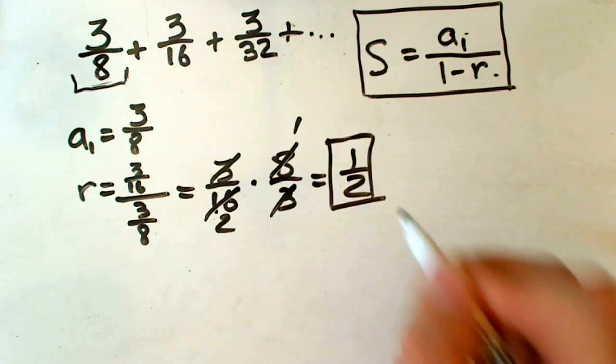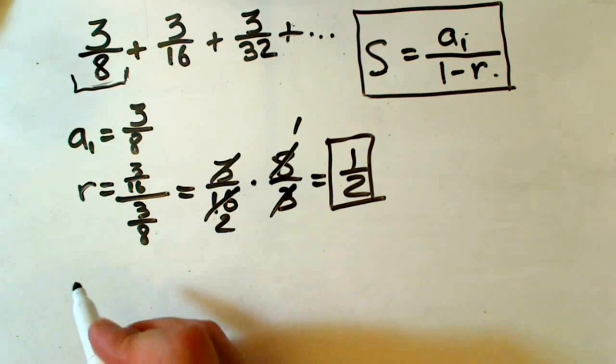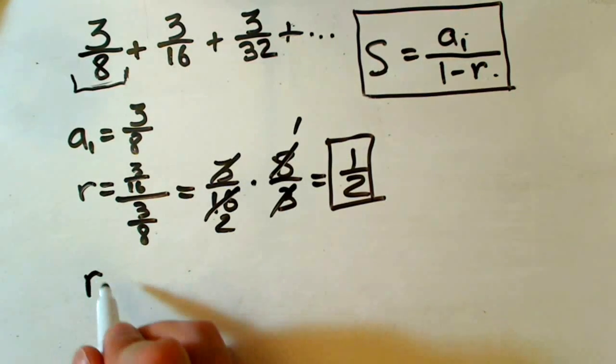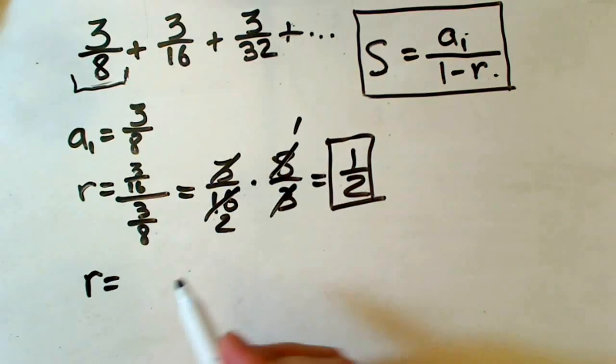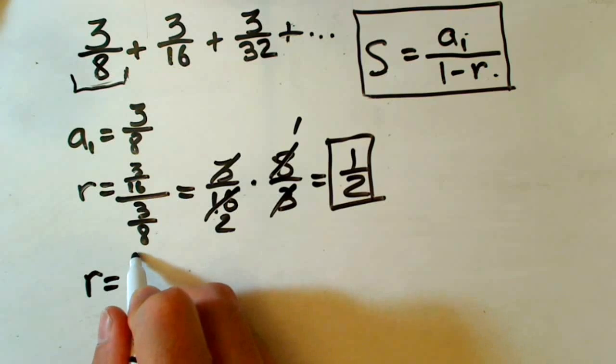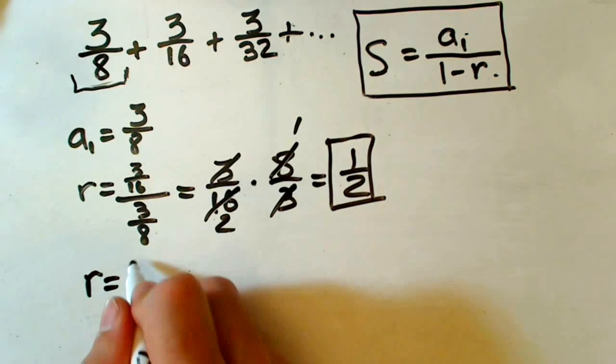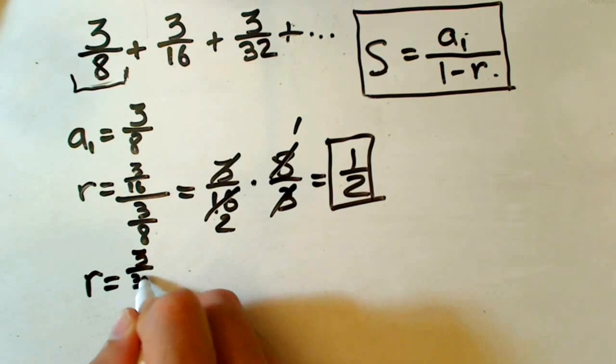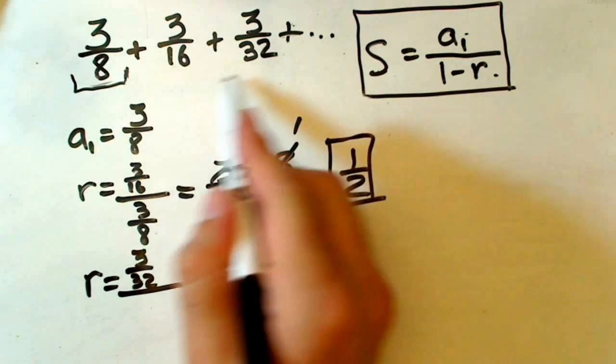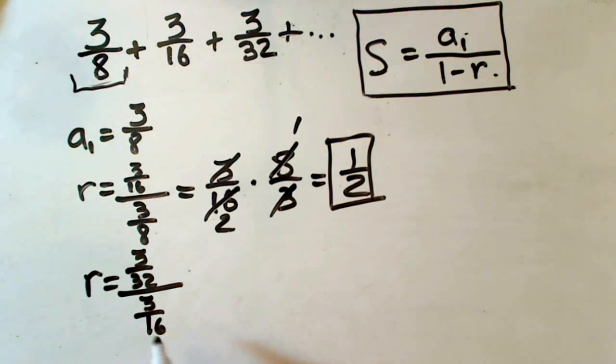To check it, we should divide another two terms. Take the third term, 3 over 32, divided by the previous one, which is 3 over 16.